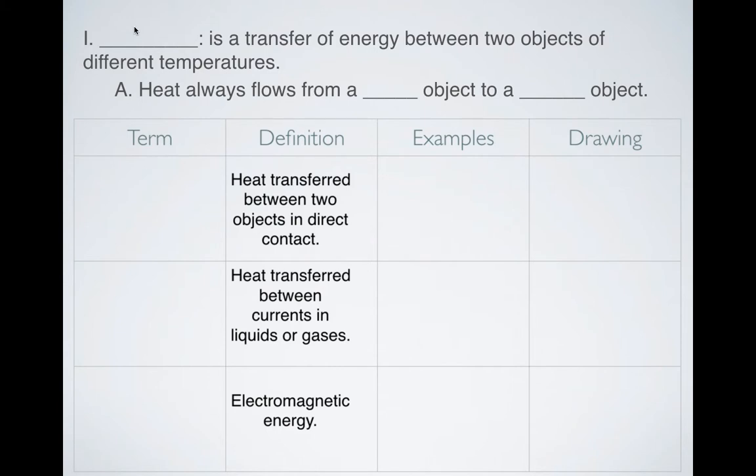This kind of sounds arbitrary and a little bit simplified, but the idea is that heat is a transfer of energy. And in order for there to be heat, you have to have two objects that have different temperatures. So the driving force of heat is the fact that if you have two objects that have different temperatures, there is going to be a transfer of energy between them.